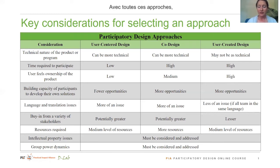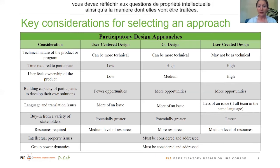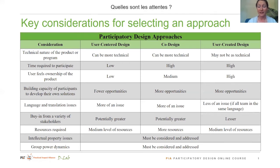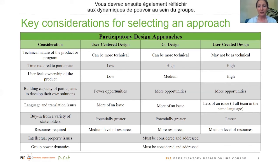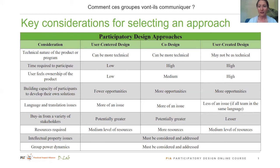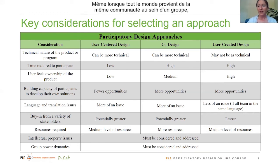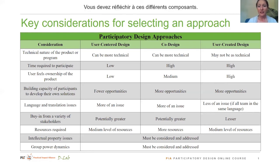With all of these approaches, you need to think about intellectual property issues and how they're going to be addressed. What are the expectations and how is that going to be put in place? You also need to think about the group power dynamics and how those groups are going to interact. Even within a group where everyone's in the same community, there may be different power dynamics there as well.